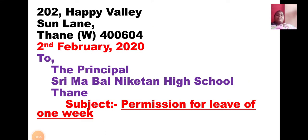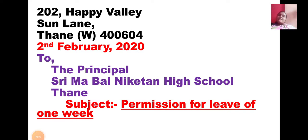The first three lines are your address - the sender's address - written on the left-hand side. It is not necessary to write your real address; keep it simple so you don't make spelling mistakes, and include the PIN code. For example: 202, Happy Valley, Sun Lane, Thane West - 400604. Write your address in just three lines, one below the other on the left-hand side. Everything in the formal letter goes on the left-hand side.